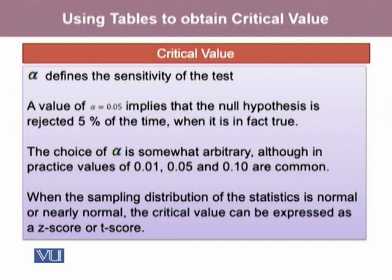Alpha defines the sensitivity of the test. It is a value that implies that the null hypothesis is rejected. If this value is 5%, which is usually used, it means that 5% of the time the null hypothesis is going to be rejected when it is in fact true. The choice of alpha is somewhat arbitrary, although in practice we use values like 0.01, 0.05, and 0.10.